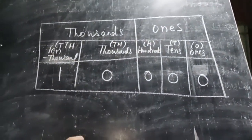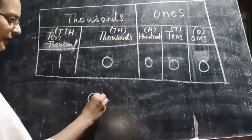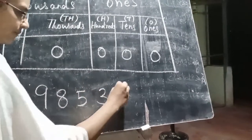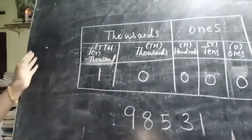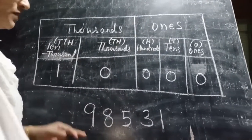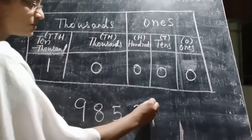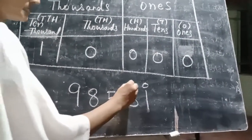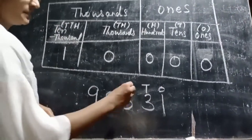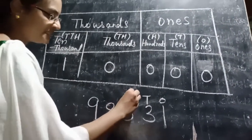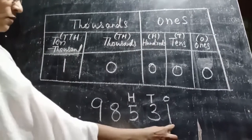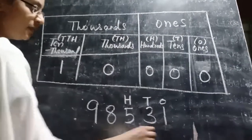Let's take another example: the digits nine, eight, five, three, one. Starting from the right, the first place is ones, the second place is tens, and the third place is hundreds. After the ones period, we place a comma.